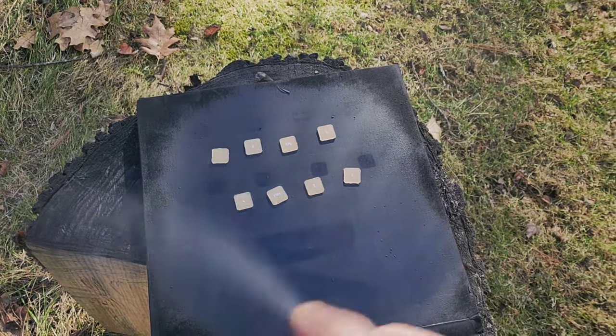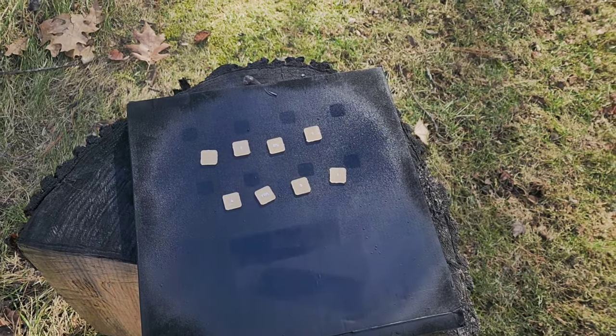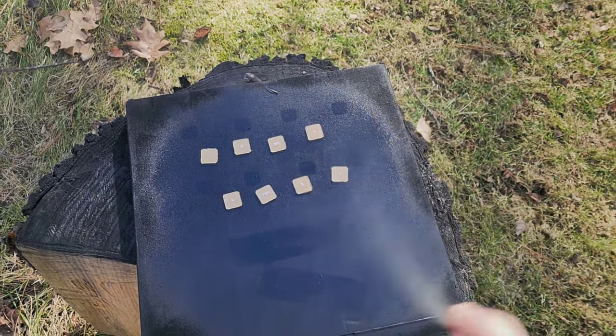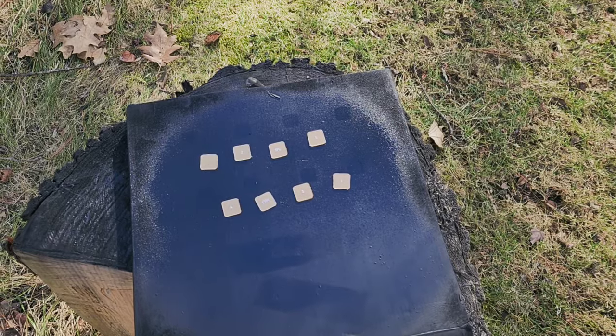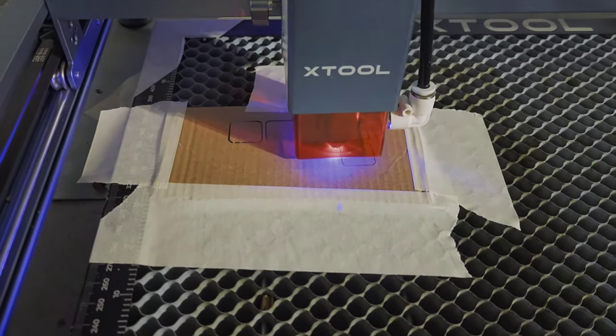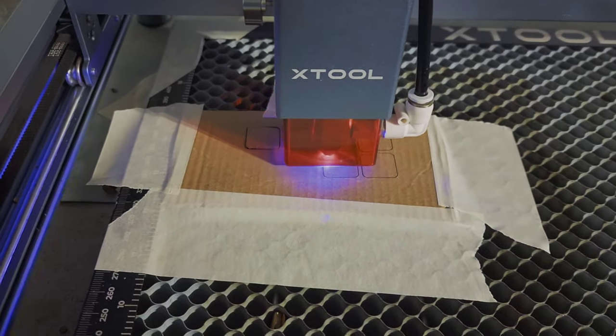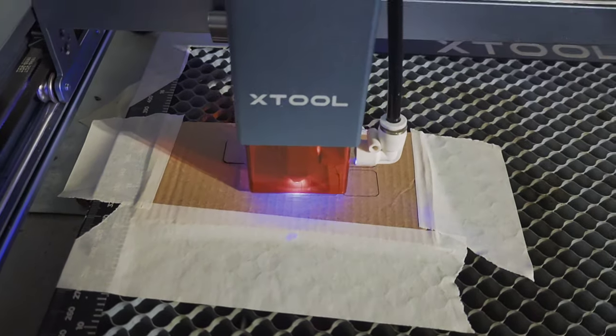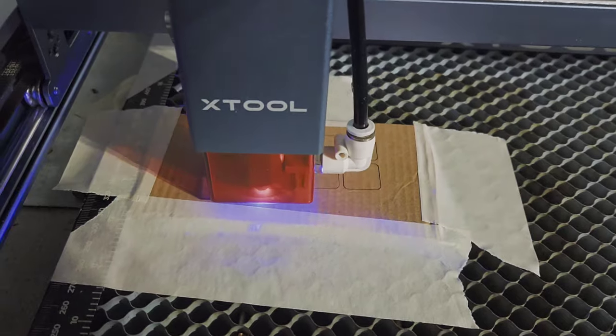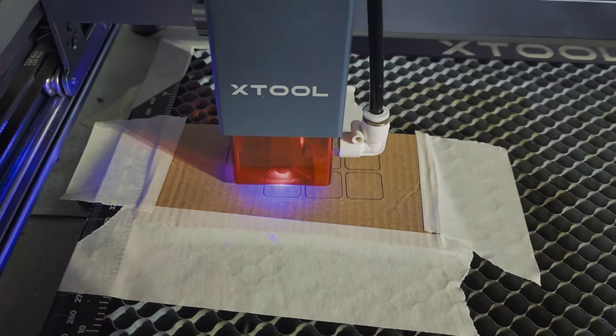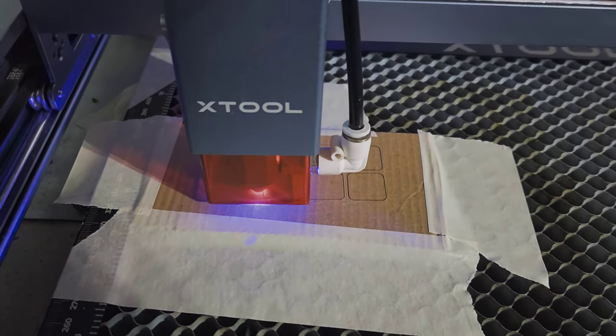While the first coat of paint is drying, I'm cutting out the template that I can drop those parts into. That will hold them in place while I engrave the backside markings through black paint, which I will do next.